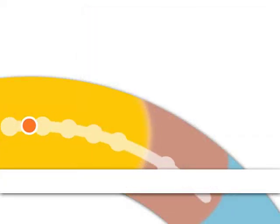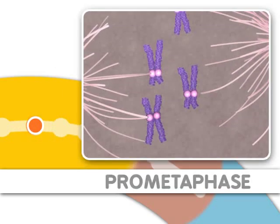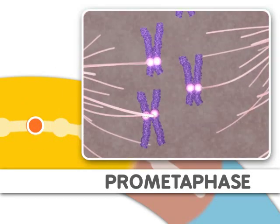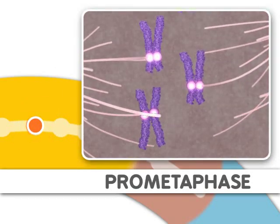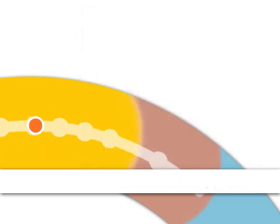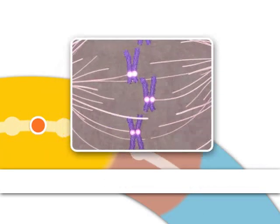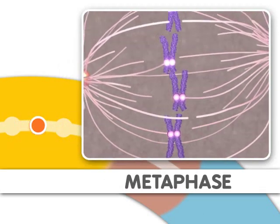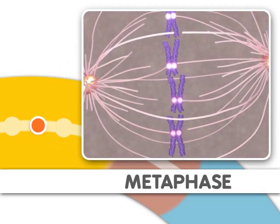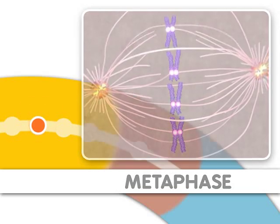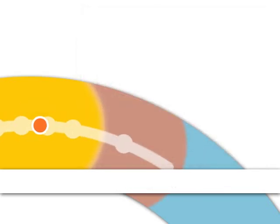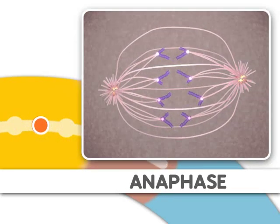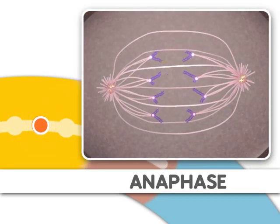Next comes prometaphase, where microtubules attach to the chromosomes. This step is followed by metaphase, where the chromosomes align. Metaphase is followed by anaphase, where the chromosomes separate.